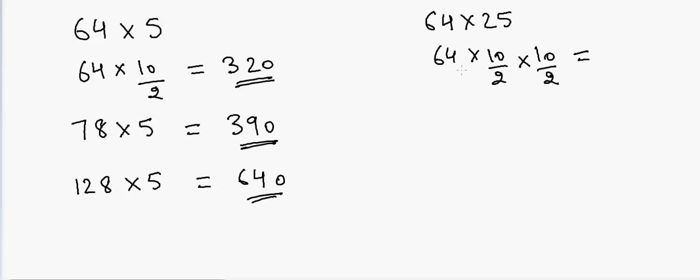Again, if I have 128 and want to multiply by 25, in that case it will be equal to half of 128, which is 64, and half of 64 is 32. It's 3200.